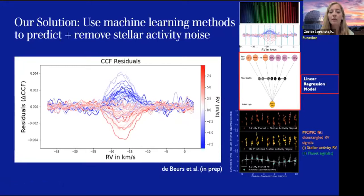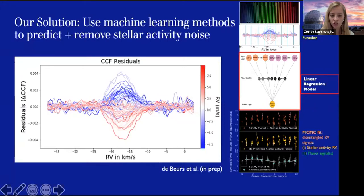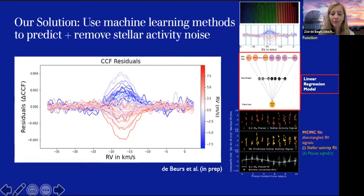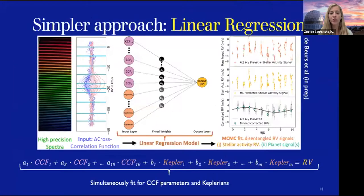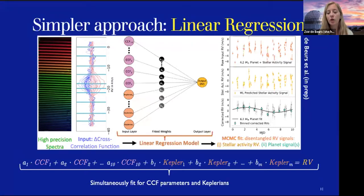For this extra-solar star, we had to make modifications. Instead of a neural network, we used a linear regression model. Two primary reasons: first, radial velocity datasets for extra-solar stars rarely have as many observations as the solar dataset from HARPS-N, which had about 600 days of observations.